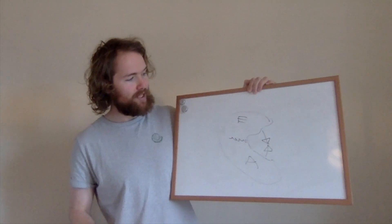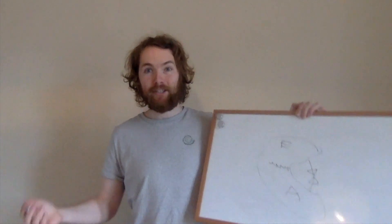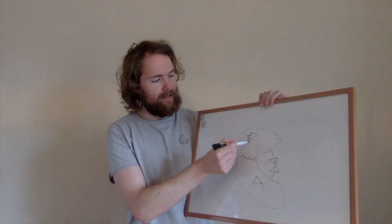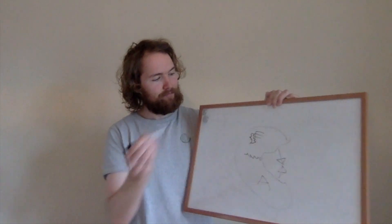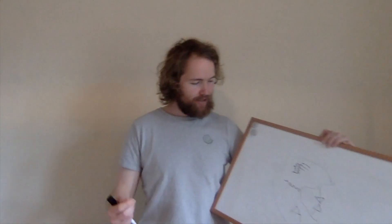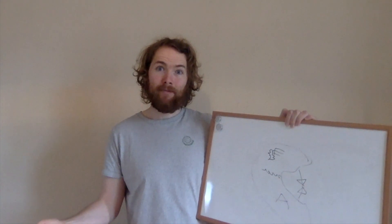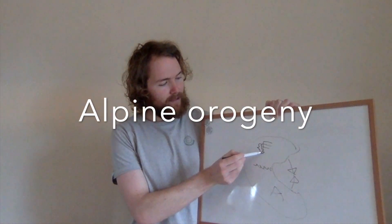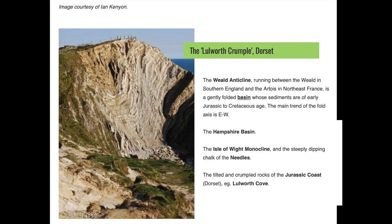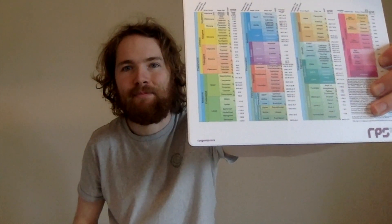That's when we see our third tectonic event that has an effect on the UK. It shows itself in the building of the Alps and is called the Alpine Orogeny. For the UK it just affects some of the very south coast — we see some anticlinal features and some folding that takes place, and not much more. The Neo-Tethys Ocean is closing during the Cretaceous period.